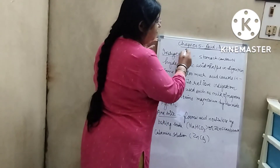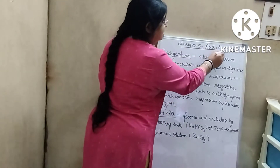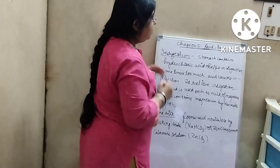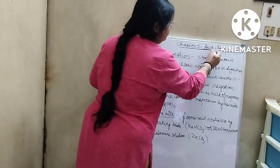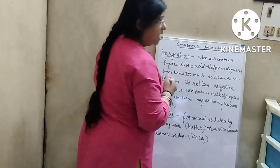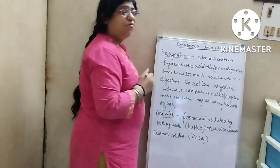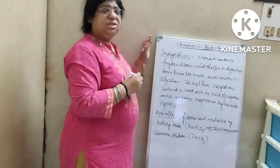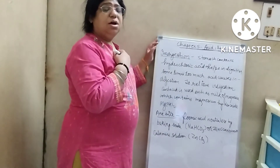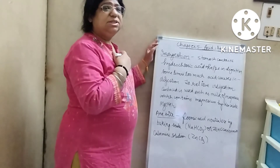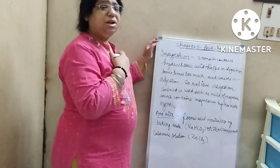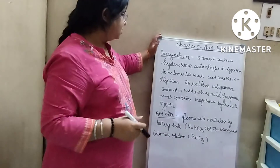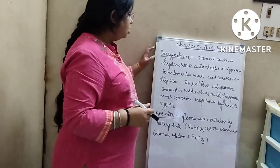We are discussing chapter 5, acids, bases and salts. We have already discussed what are acids, what are bases, indicators — phenolphthalein, litmus paper, turmeric, china rose — all indicators we have discussed.